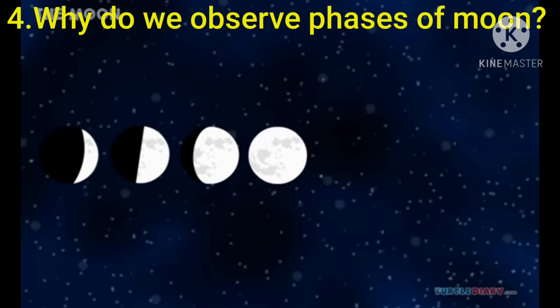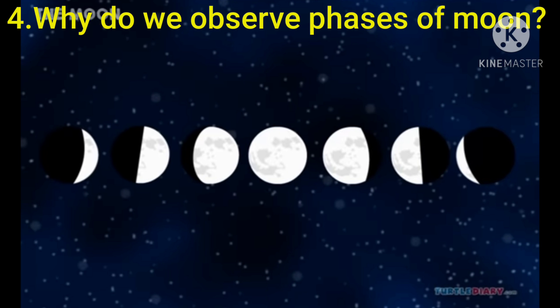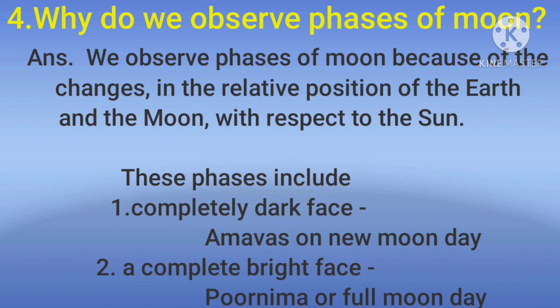Next question is, why do we observe phases of moon? Answer is, we observe phases of moon because of the changes in the relative position of the earth and the moon with respect to the sun. These phases include a completely dark phase — amavas or new moon — and a complete bright phase — purnima or full moon day.